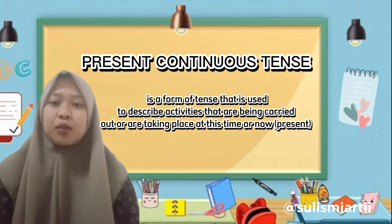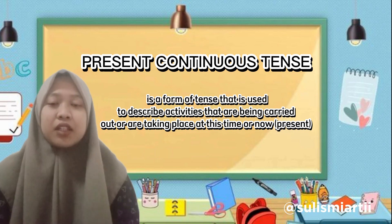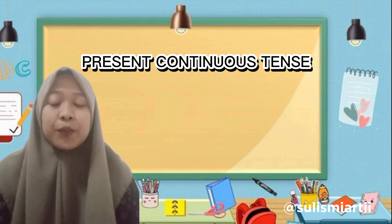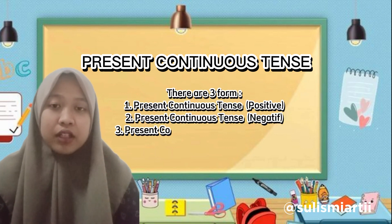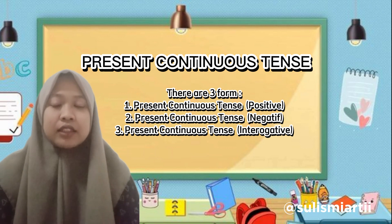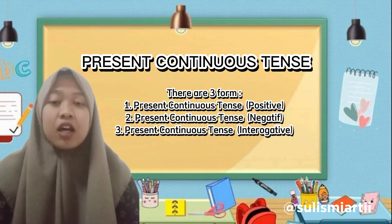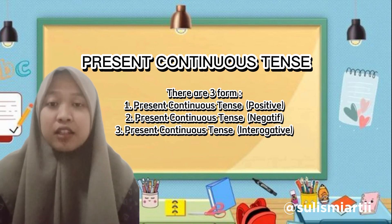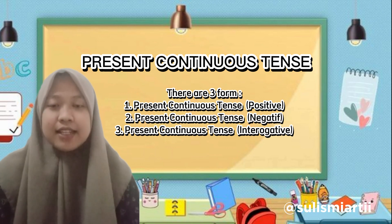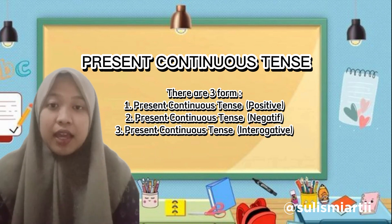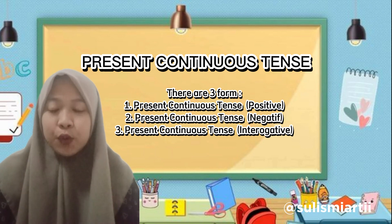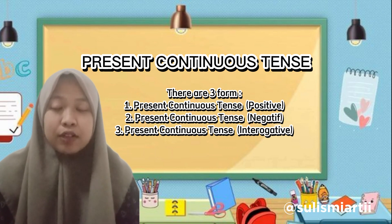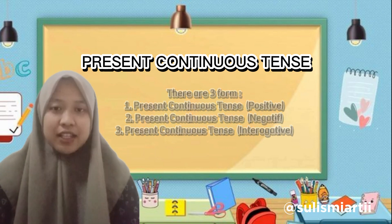For example: 'She is eating at the moment' — that can be called present continuous tense. The present continuous tense has three forms: the first one is the positive form, the second one is the negative form, and the third one is the interrogative form.